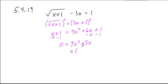Remove a common factor of x, leaving 9x plus 5, and when we solve this, set each of these factors equal to 0.